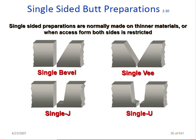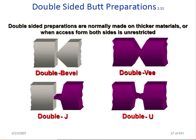Single-sided joint preparation is normally used on thinner materials or when access from both sides is restricted. In that case, you use single bevel, single-V, single-U, or single-J. Double-sided weld preparation is normally used on thicker materials — perhaps more than 25mm — where back gouging can be done and access from both sides is available, so the bevel can be prepared on both sides.